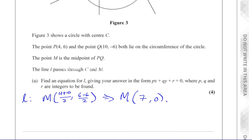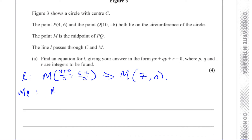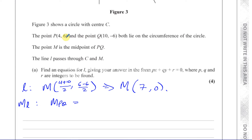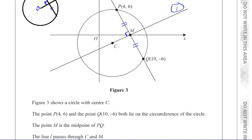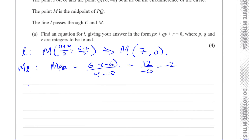Now we need the gradient of line L. First, we find the gradient of PQ: change in y is 6 − (−6) = 12, change in x is 4 − 10 = −6, so the gradient of PQ is 12/(−6) = −2. Since line L is perpendicular to PQ, its gradient is the negative reciprocal: −(1/(−2)) = 1/2. So the gradient of line L is 1/2.